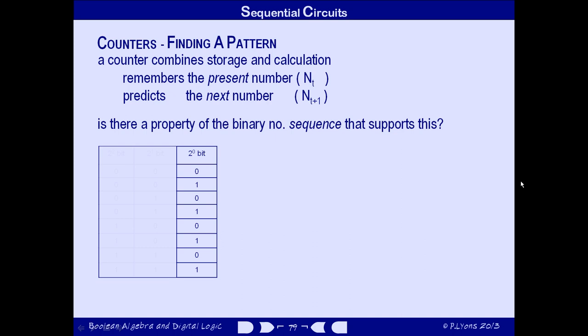It's easy to see a pattern in the least significant bit of a sequence of binary numbers. It continually alternates between 0 and 1. We can write this down formally in an equation that says that the 2 to the 0 bit at time t plus 1 is the inverse of the 2 to the 0 bit at time t.